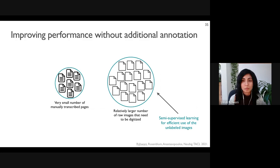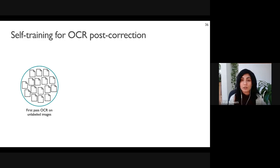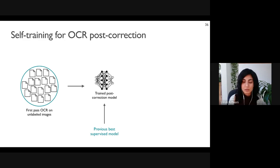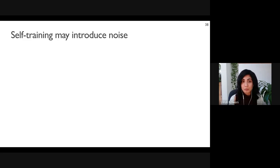I'm going to present a semi-supervised learning method that improves transcription accuracy by efficiently utilizing these unlabeled images. First, we incorporate self-training into the post-correction model. We get a first-pass OCR on the hundreds of unlabeled images, apply our trained post-correction model to get predictions on these images, and use the predictions as pseudo training data to retrain the model. We repeat this process iteratively to get better predictions.